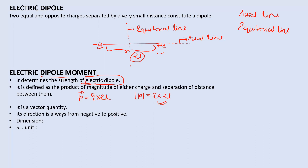Always remember the direction of the electric dipole moment is from negative to positive. Note that the direction of the electric field is from positive to negative, but the dipole moment goes from negative to positive. Since it has a direction, it is a vector quantity.